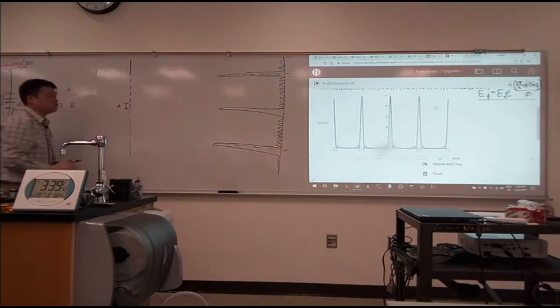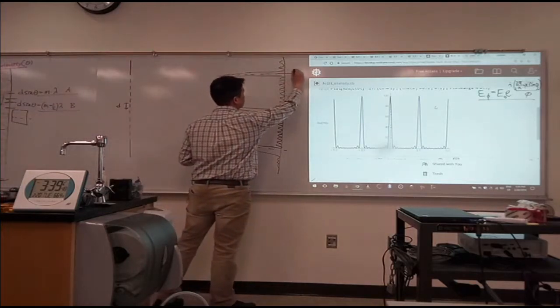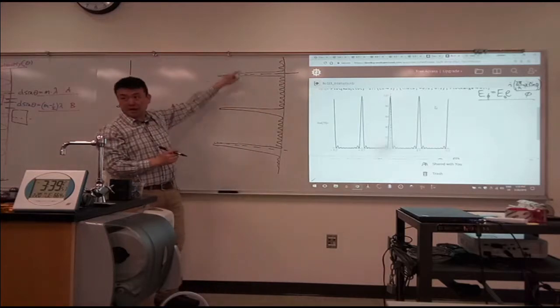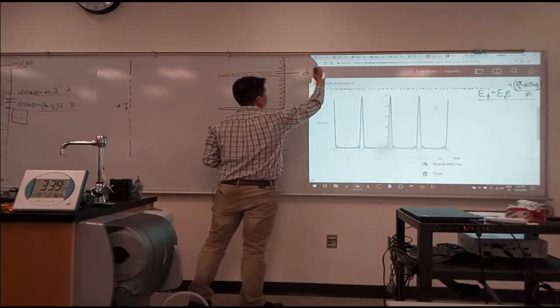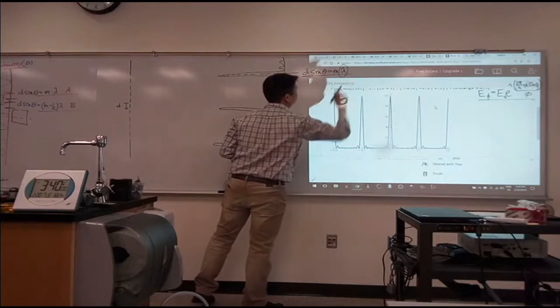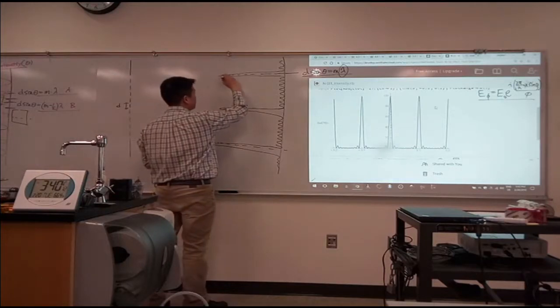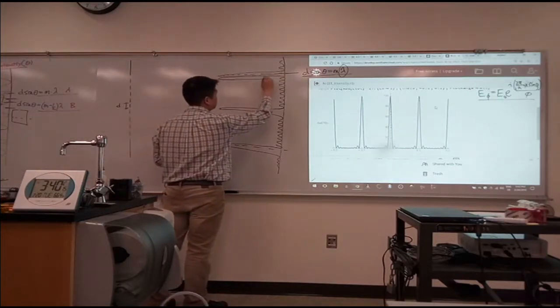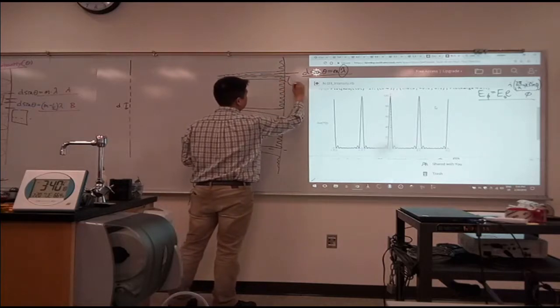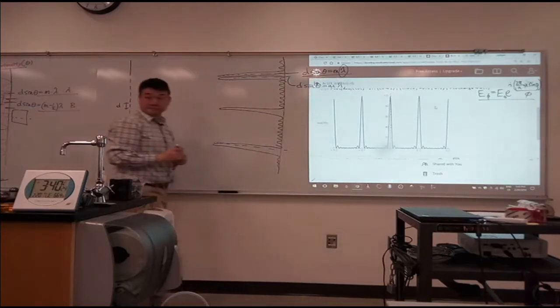The slit separation is D. You know that this first interference, or the principal maxima, are given by this condition: D sine theta is equal to M lambda. So it depends on wavelength lambda. When you change wavelength, let's say make it shorter, then the pattern you see will change. For a shorter, bluer wavelength, you'll get an interference maximum that occurs maybe here, where this will be given by D sine theta and different lambda.